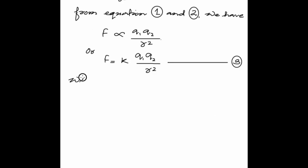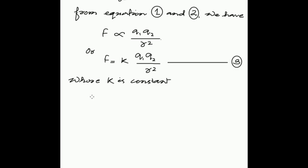K is called the electrostatic force constant. The value of K depends on the nature of the medium between the two charges and the system of units chosen to measure F, Q1, Q2, and R.